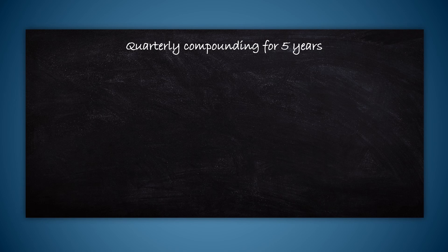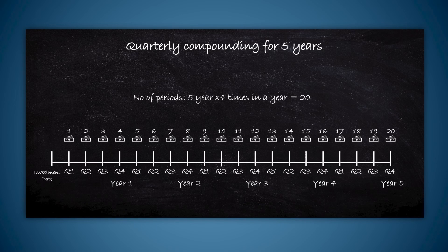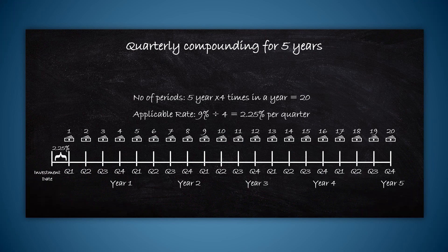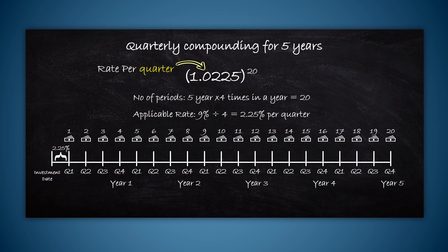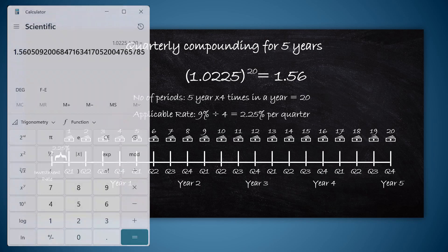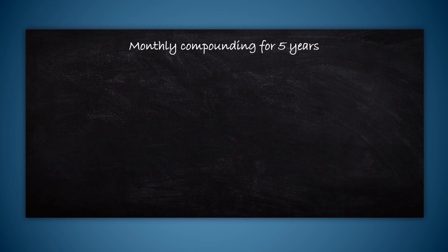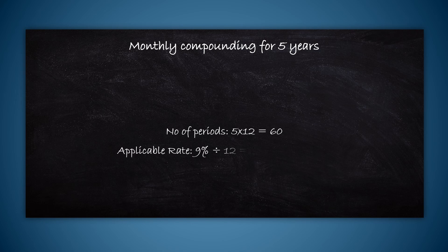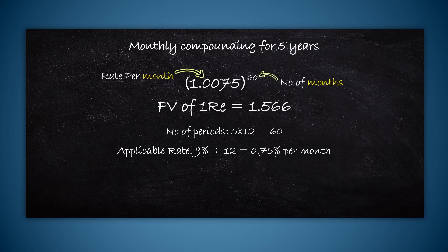Now what if it's quarterly compounding? This means they are going to add the interest every 3 months, and this will happen 4 times in a year — 20 times in 5 years. The applicable interest rate here is the interest rate per quarter, which you get by dividing 9 by 4, which is 2.25%. The calculation will become 1.0225 to the power 20, and you get 1.56. For monthly compounding, they will add the interest after every month — 12 times in a year, 60 times in 5 years. The rate will be 9 ÷ 12 = 0.75% per month, resulting in a future value of 1.566 for every 1 rupee.